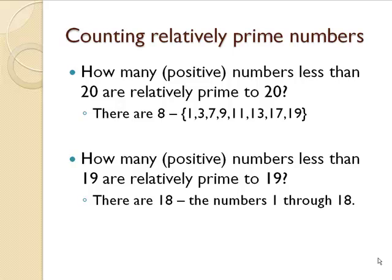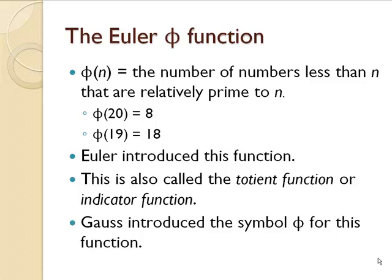We have them listed here. For the numbers less than 19 that are relatively prime to 19, there are 18 of them — 1 through 18. The Euler phi function, phi of n, is the number of numbers less than n that are relatively prime to that number n. So phi of 20 is 8 and phi of 19 is 18.